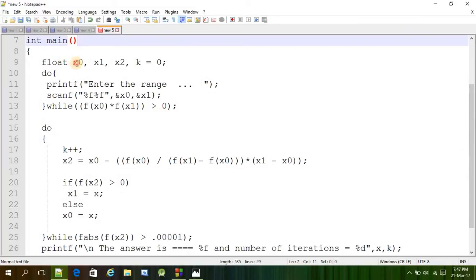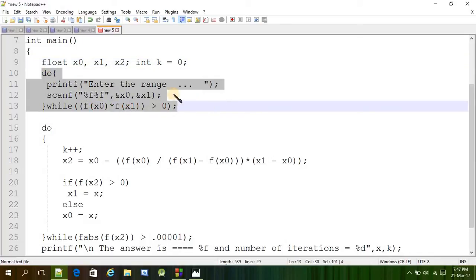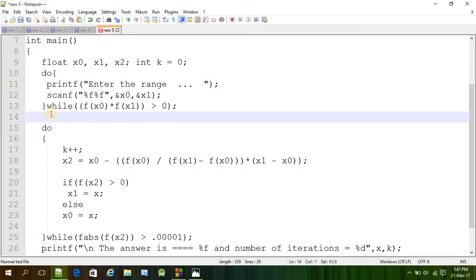So I have taken three float variables and one integer type of variable that is k, to know the number of iterations. It is like count. And then the do while loop to get the intervals. Enter the range and then we will put the range. If the multiplication of these 2 is greater than 0, then the range is not correct then the loop will rotate again until it gets the correct interval.